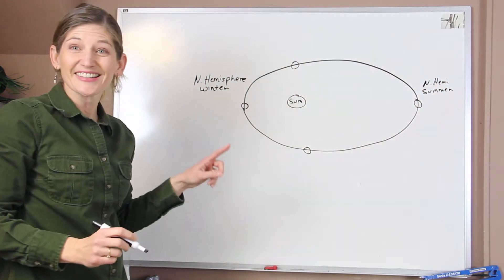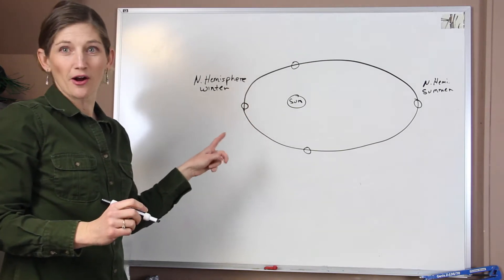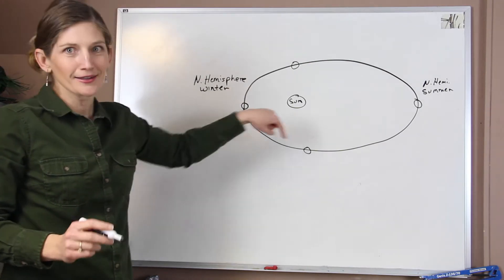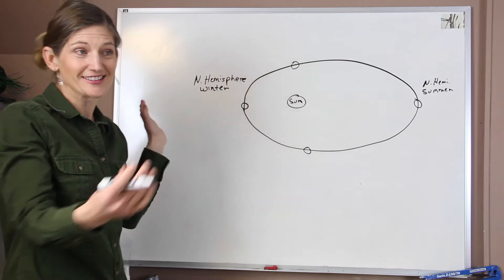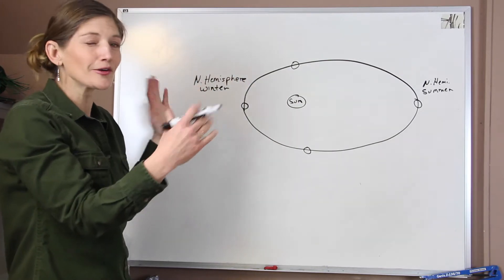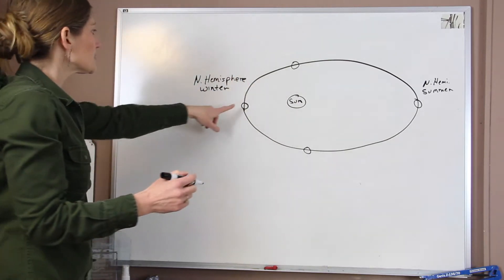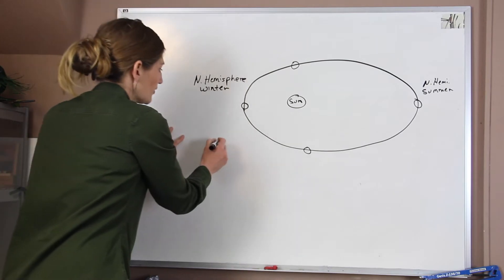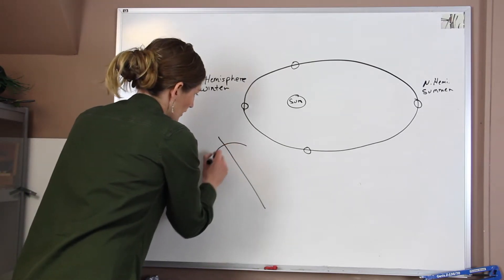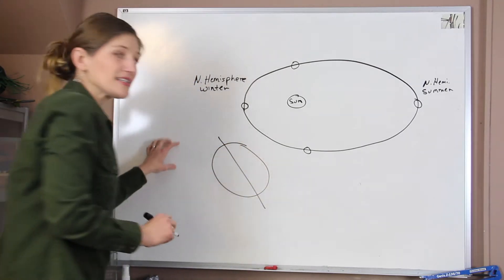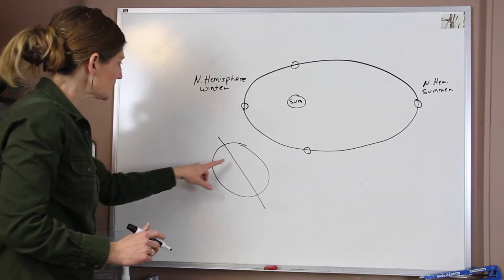So our seasons are not related to how close or how far we are from the sun. And in reality, this ellipse that I've drawn out is actually almost a circle, but just not quite. So what's really happening? When we look at the Earth, it sits tilted on its axis. So what does that mean?